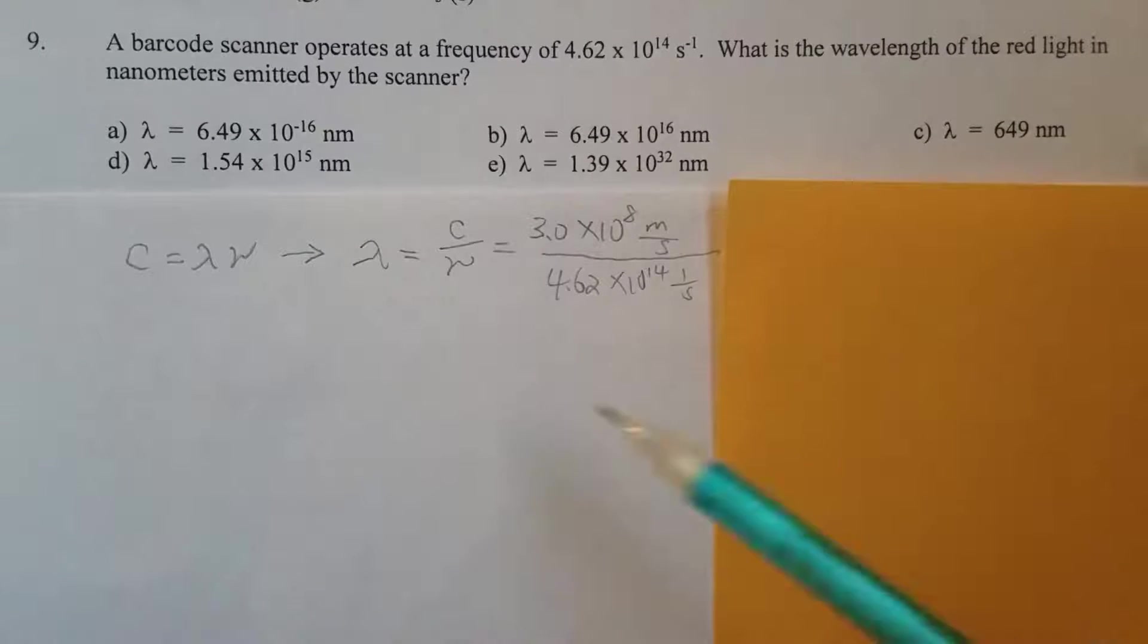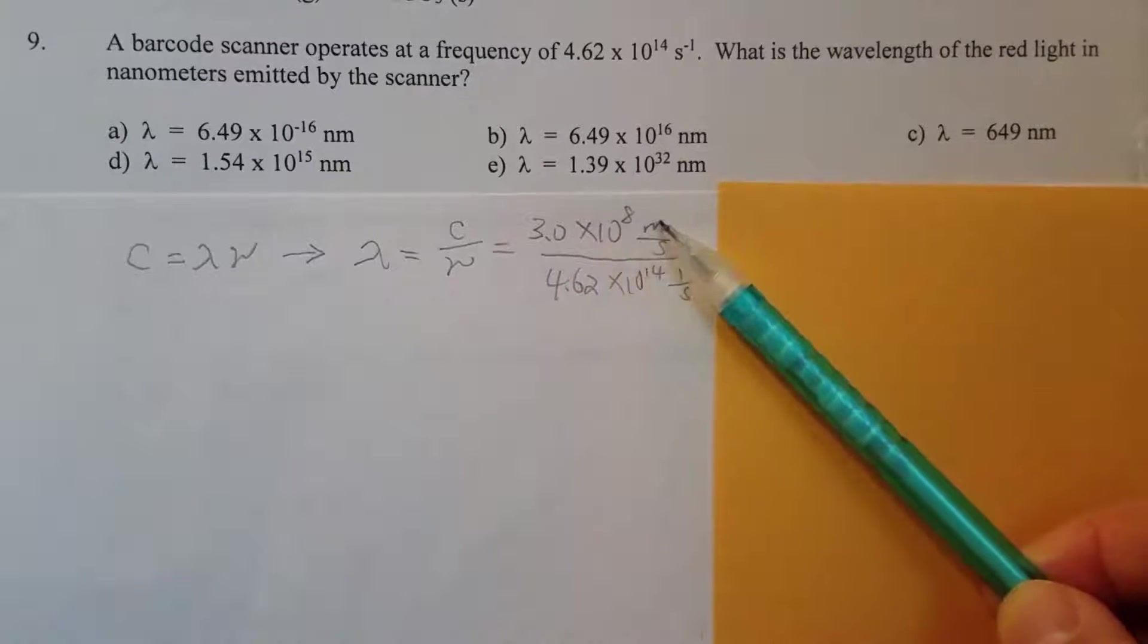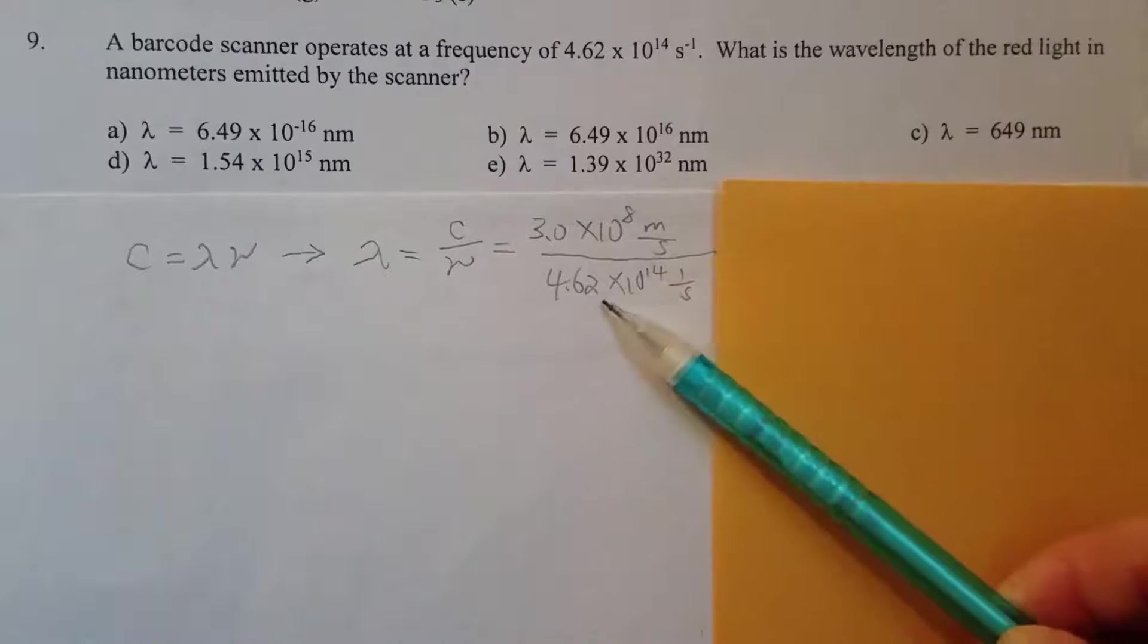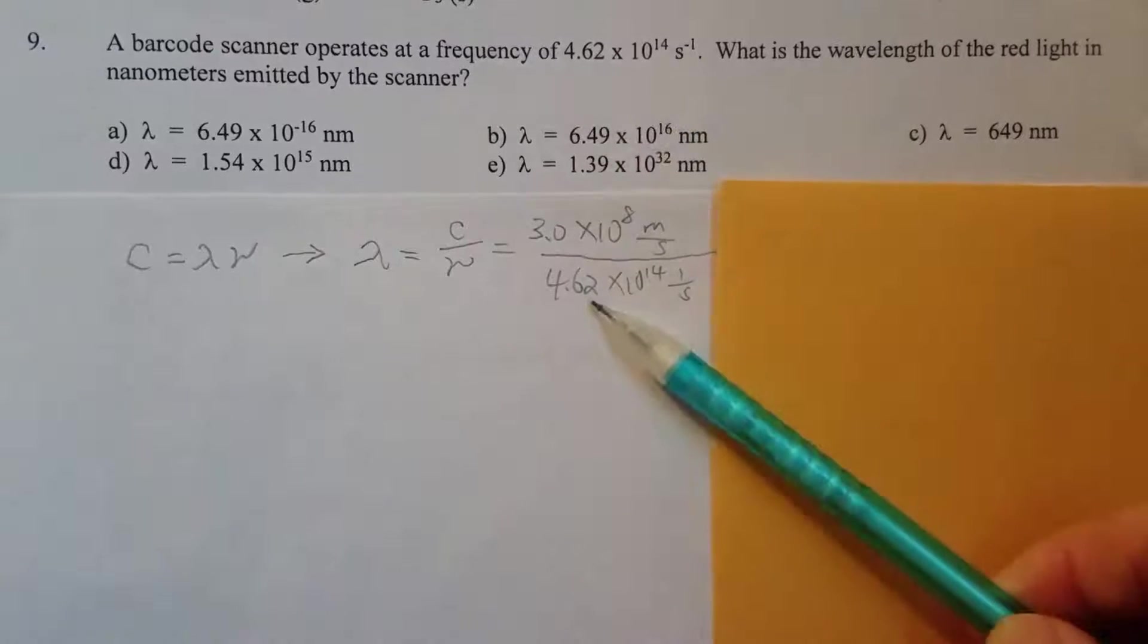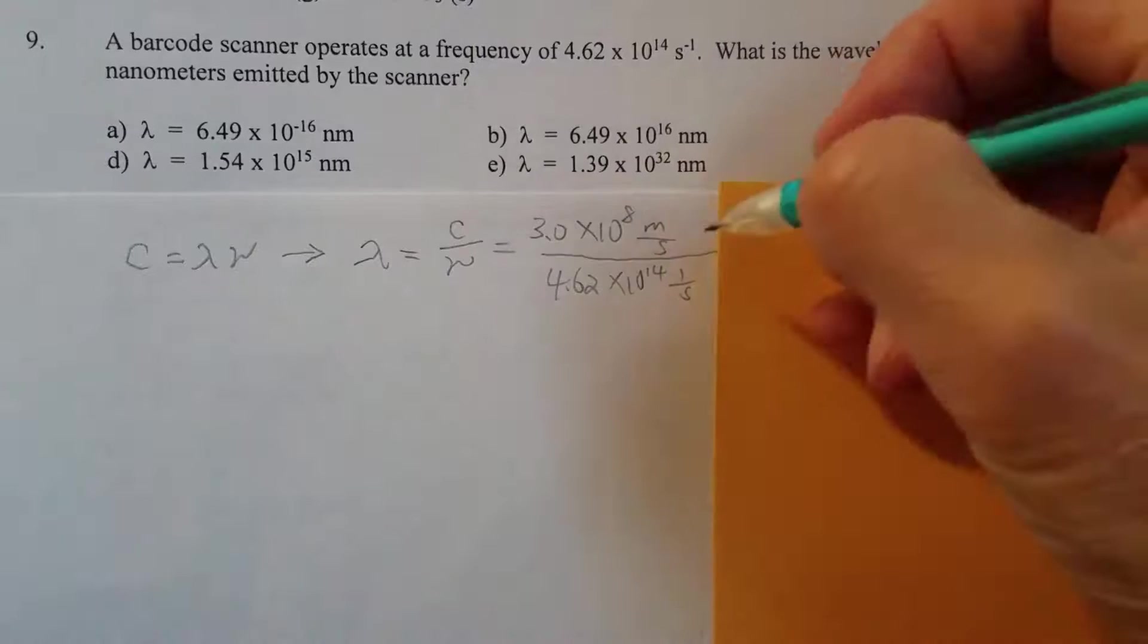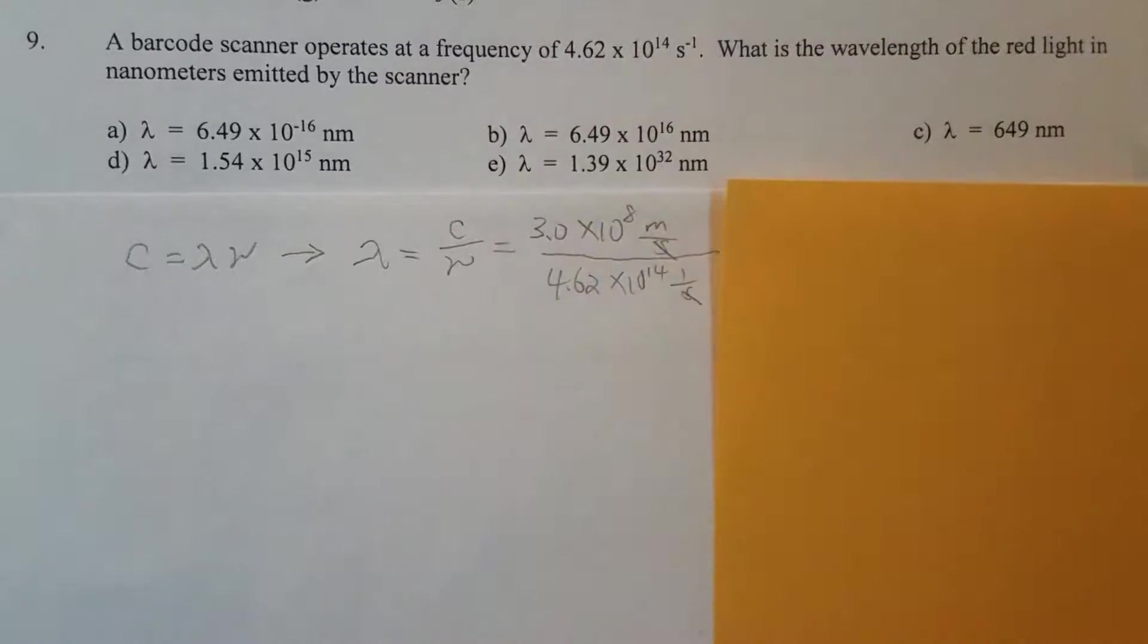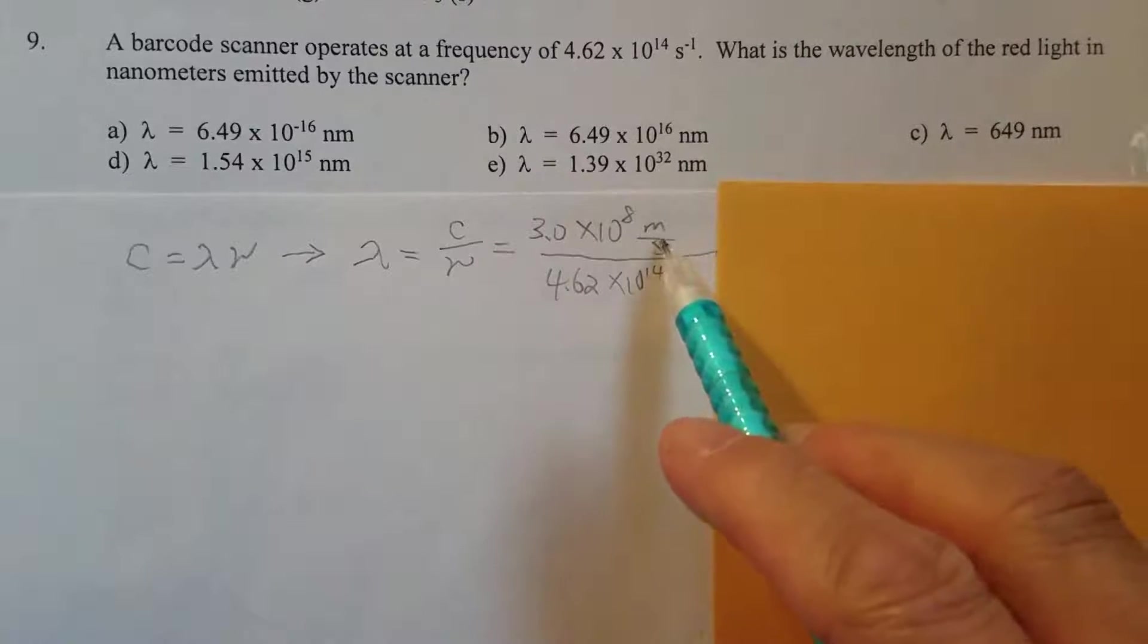The speed of light is 3 times 10 to the 8th meter per second, and then the frequency that is given, so I will just put the number right here. And as you can see, seconds and seconds can be cancelled, therefore the unit for the final answer should be in meters.